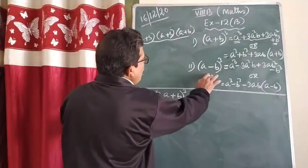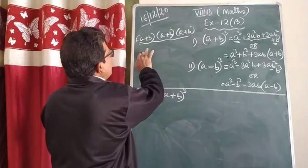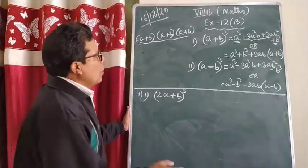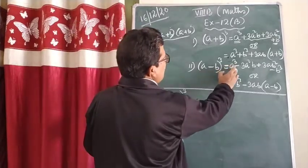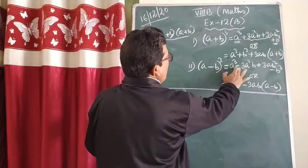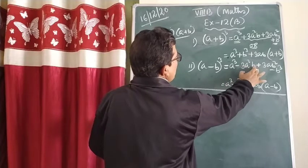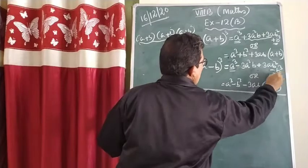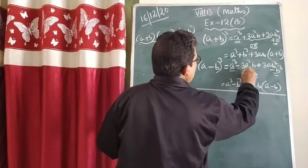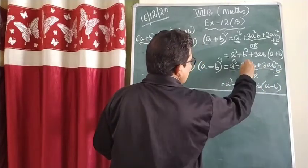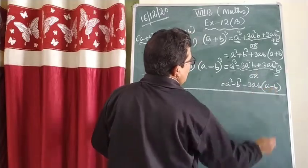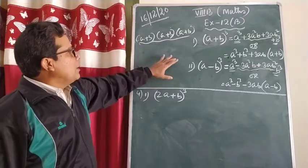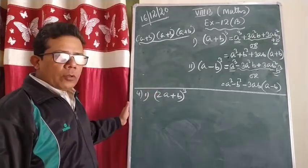Same way for (a-b)³: multiply (a-b) × (a-b) × (a-b) three times and you will get the result. What is the formula? a³ - 3a²b + 3ab² - b³. Or equivalently: a³ - b³ - 3ab(a-b). So remember both forms and with these two formulas you are going to solve the problems.